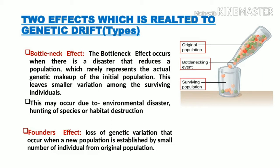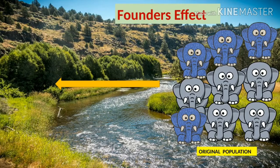Founder's effect also shows the same two properties we saw for bottleneck effect: first, the new founder population will not represent the actual genetic makeup of the original population; and second, the founder population will represent reduced variation among them. Let's take an example using elephants to understand this better.